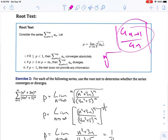And so all of the criteria here for convergence are the same. If ρ is greater than or equal to 0 but less than 1, then the series converges absolutely. So this is also a test for absolute convergence. It diverges if it's greater than 1 or infinity. And if it's equal to 1, once again, the test does not provide any information.